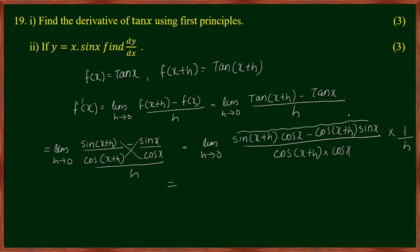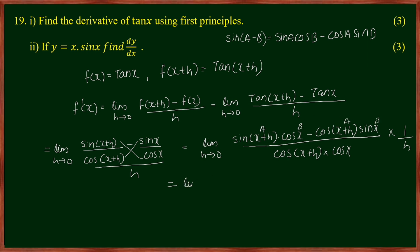We recognize the numerator as the sin(A - B) formula: sin A cos B - cos A sin B = sin(A - B). Here A = x+h and B = x, so the numerator becomes sin((x+h) - x) = sin h. The expression becomes: limit h→0 of sin h divided by [cos(x+h)·cos x], multiplied by 1/h.